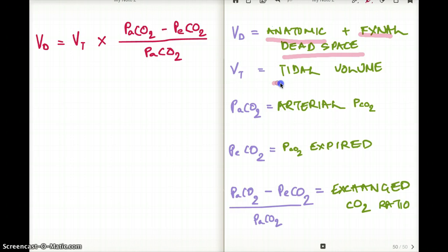VT is the tidal volume, the normal exchange that's happening, the volume that is being exchanged. PaCO2 is the partial pressure of carbon dioxide. PeCO2 is the expired partial pressure of expired carbon dioxide. So now let's talk about the equation.